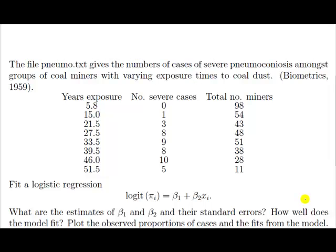Here we have an example of coal miners being exposed to coal dust and we record whether or not miners get a certain disease. Now the way we read this is that the number of years of exposure to coal dust is 5.8 years. How many of such miners are exposed to that? 98. Of those 98, how many got the disease? None.